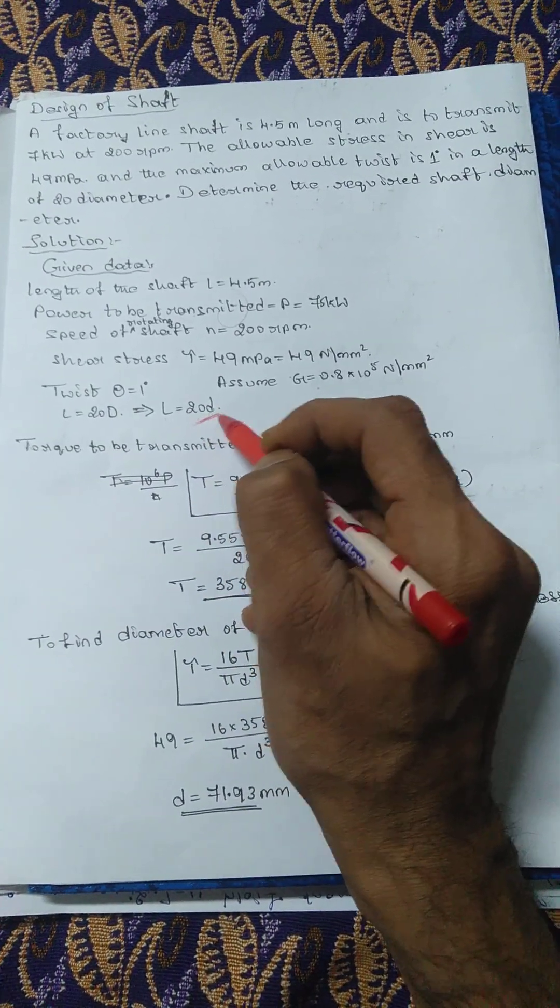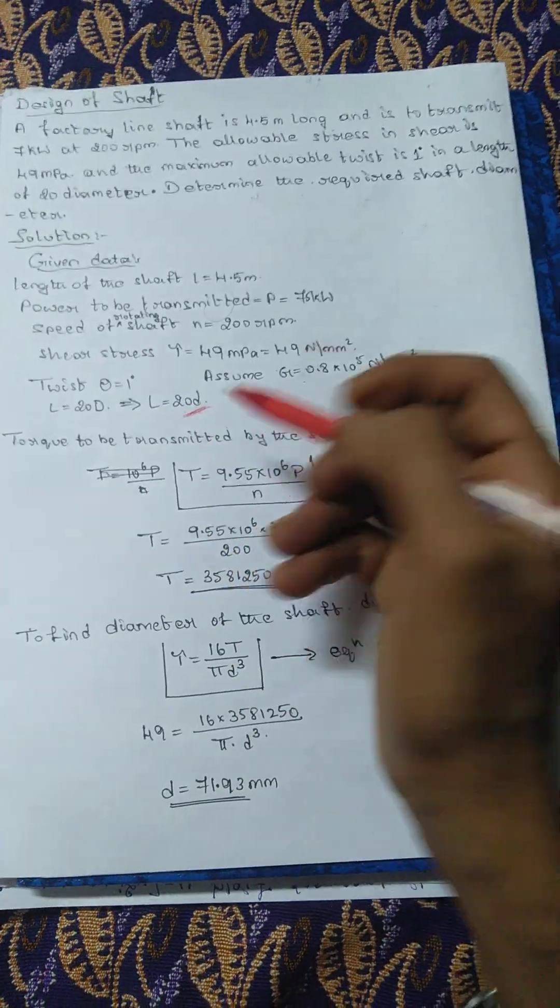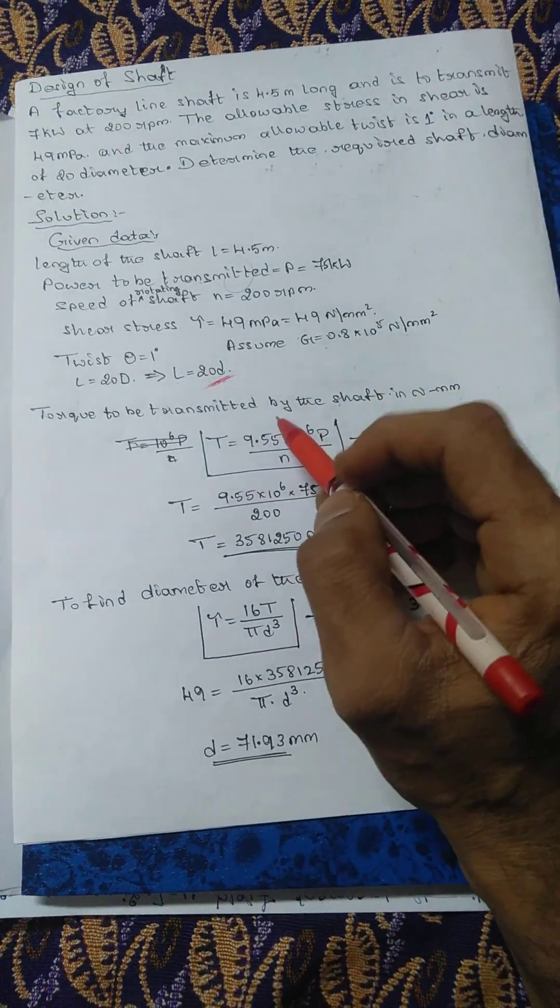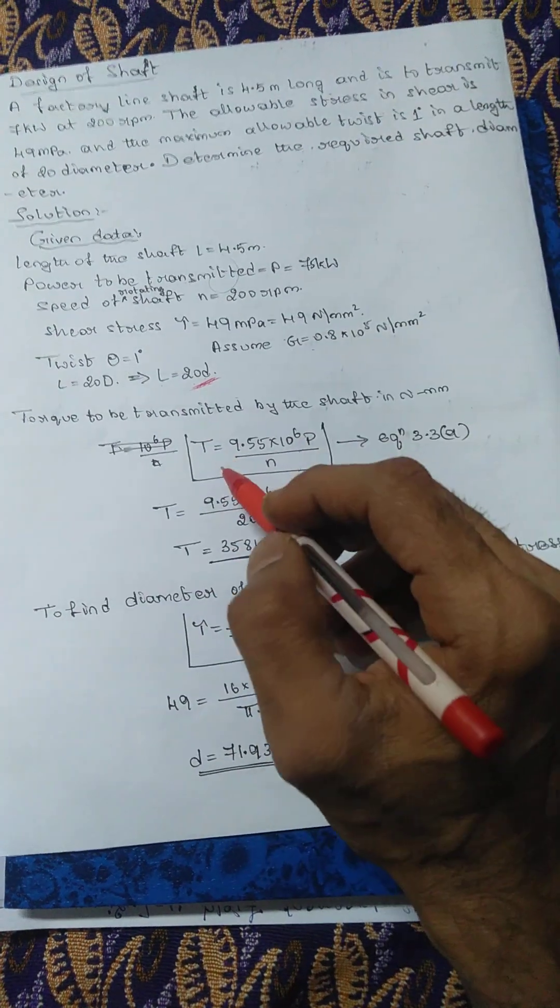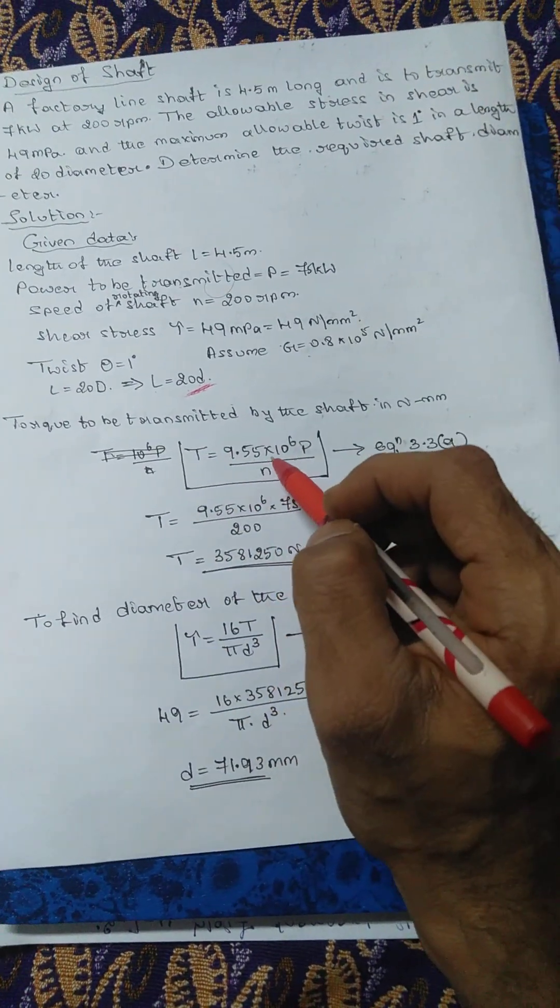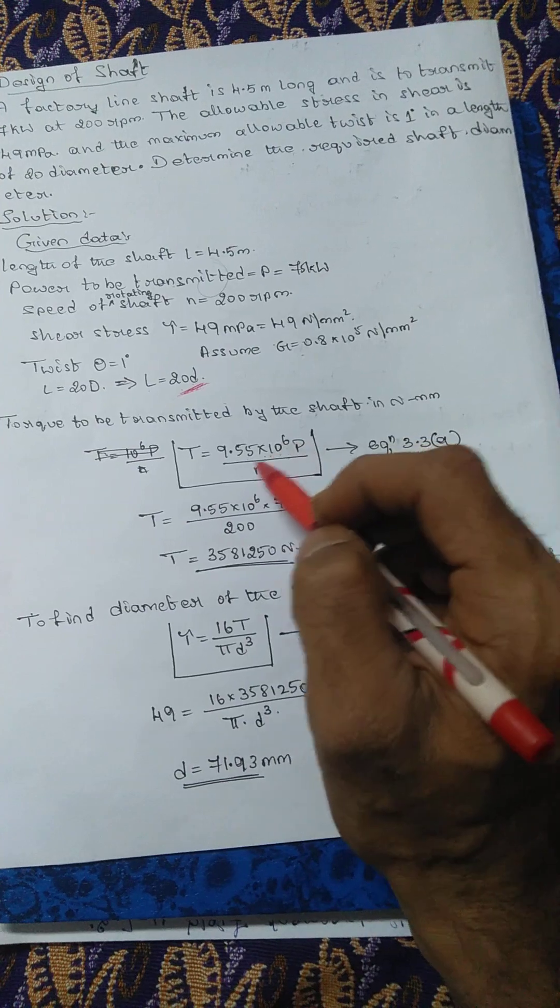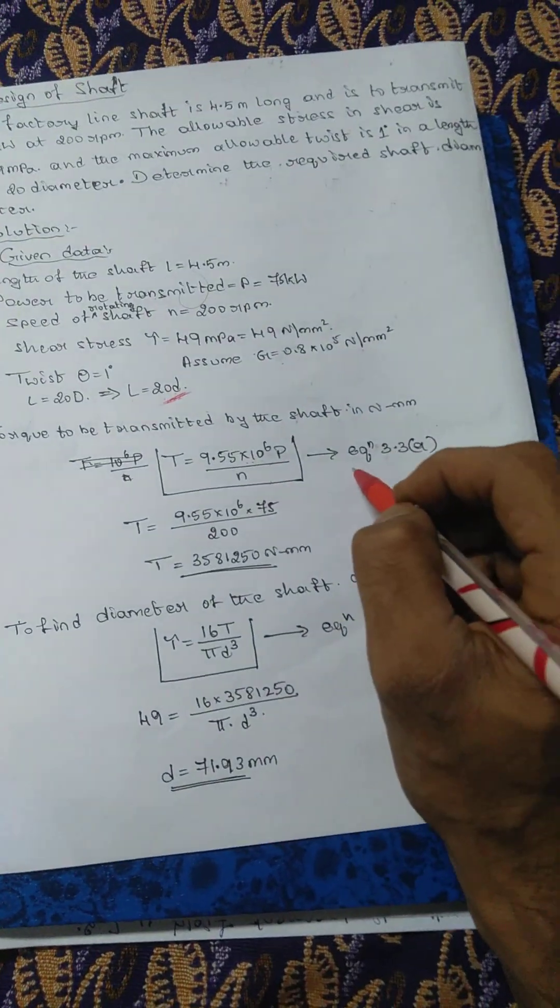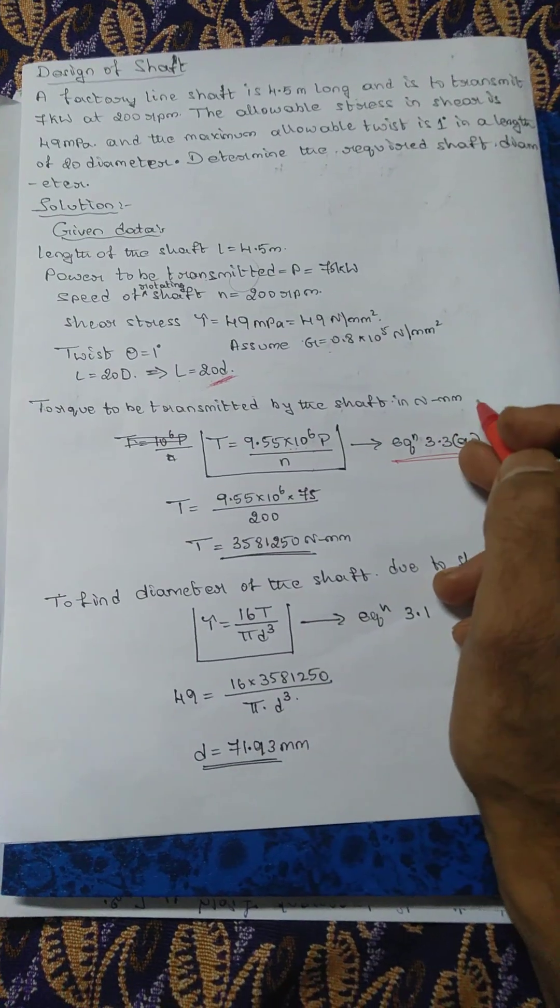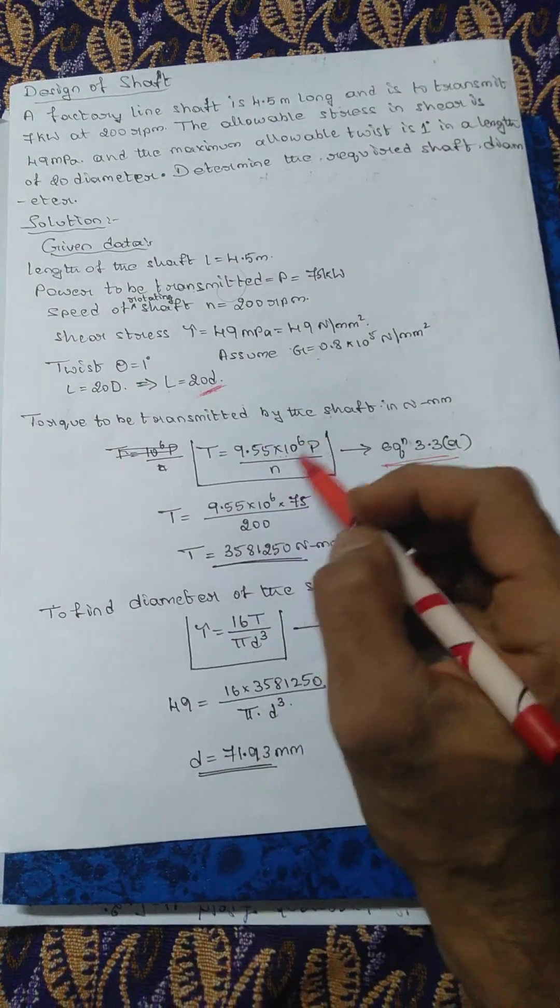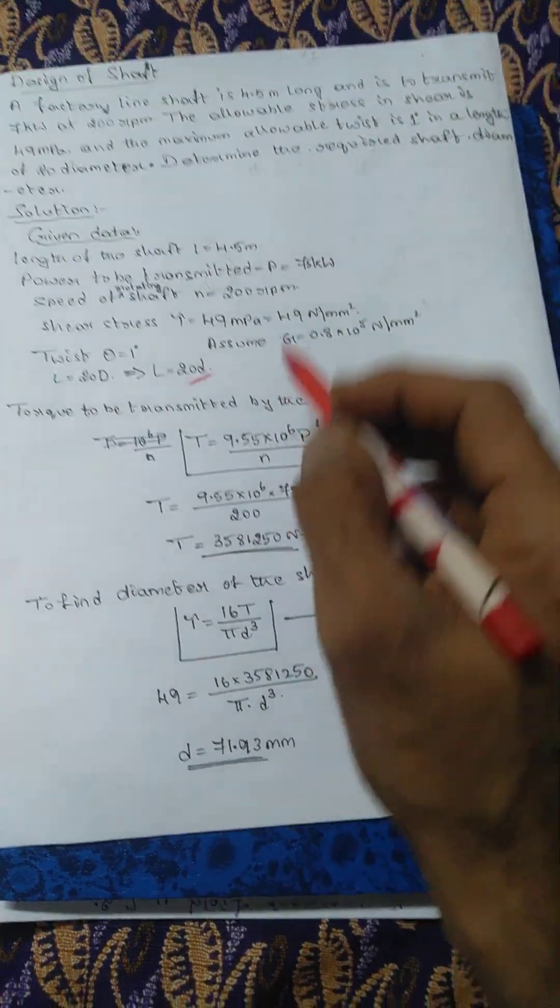Initially we will start with the equation of the torque to be transmitted by the shaft: T equals 9.55 times 10 to the power 6 times p by n. The equation number is 3.3a in the data handbook.